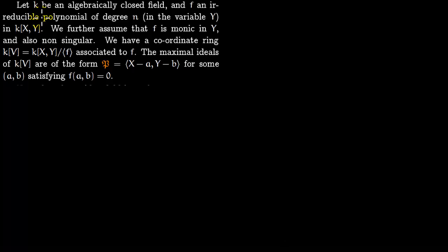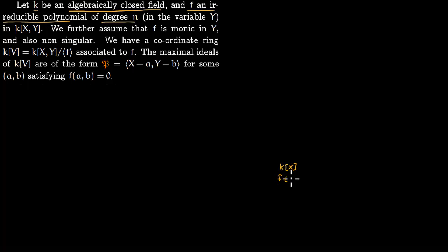First we need to recall some algebraic geometry. We start with k, which is an algebraically closed field — you can take this as the complex numbers — and f is an irreducible polynomial of degree n. We think of this polynomial with coefficients in k[x] and variable y, so f lies in k[x,y]. The degree is in terms of the variable y, and we further assume that f is monic in y and non-singular.